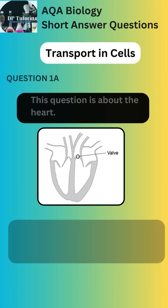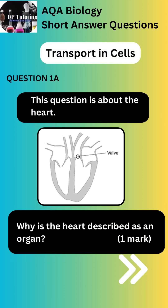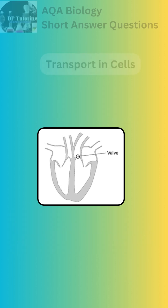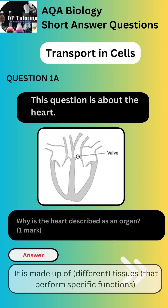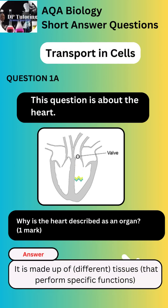Part A of the question asks: why is the heart an organ? The first thing to remember is what is an organ — this will help you arrive at a simple answer to earn one mark. The correct answer for Part A is: it is made up of different tissues that perform specific functions.